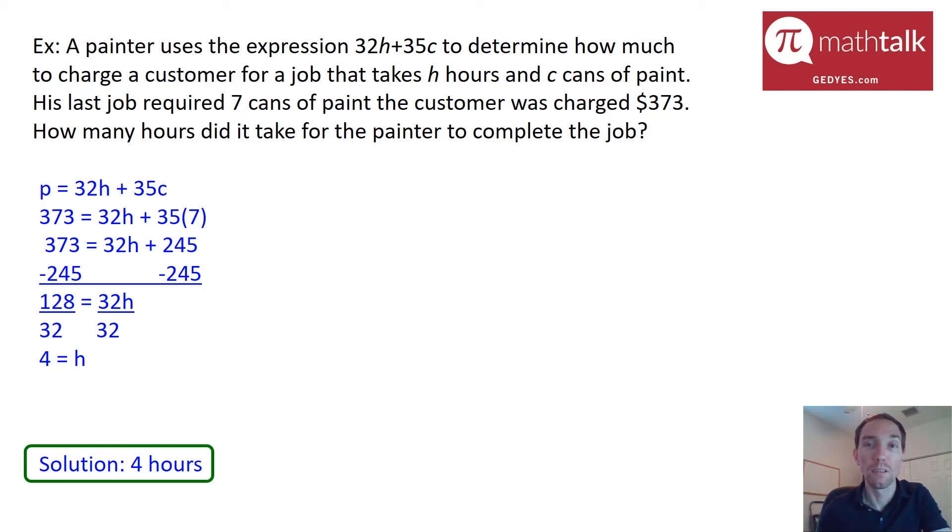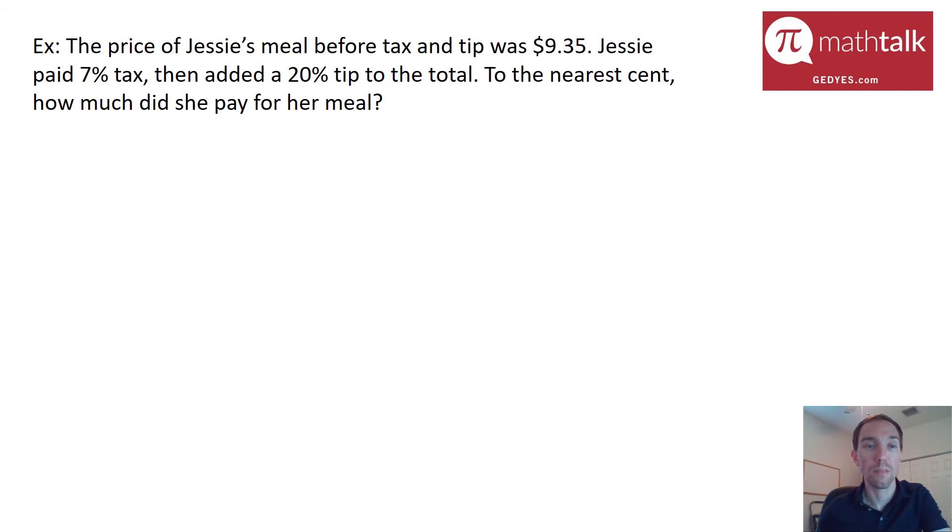Okay let's look at one more example. The price of Jessie's meal before tax and tip was $9.35. Jessie paid a 7% tax and then she added a 20% tip to the total. To the nearest cent how much did she pay for her meal?